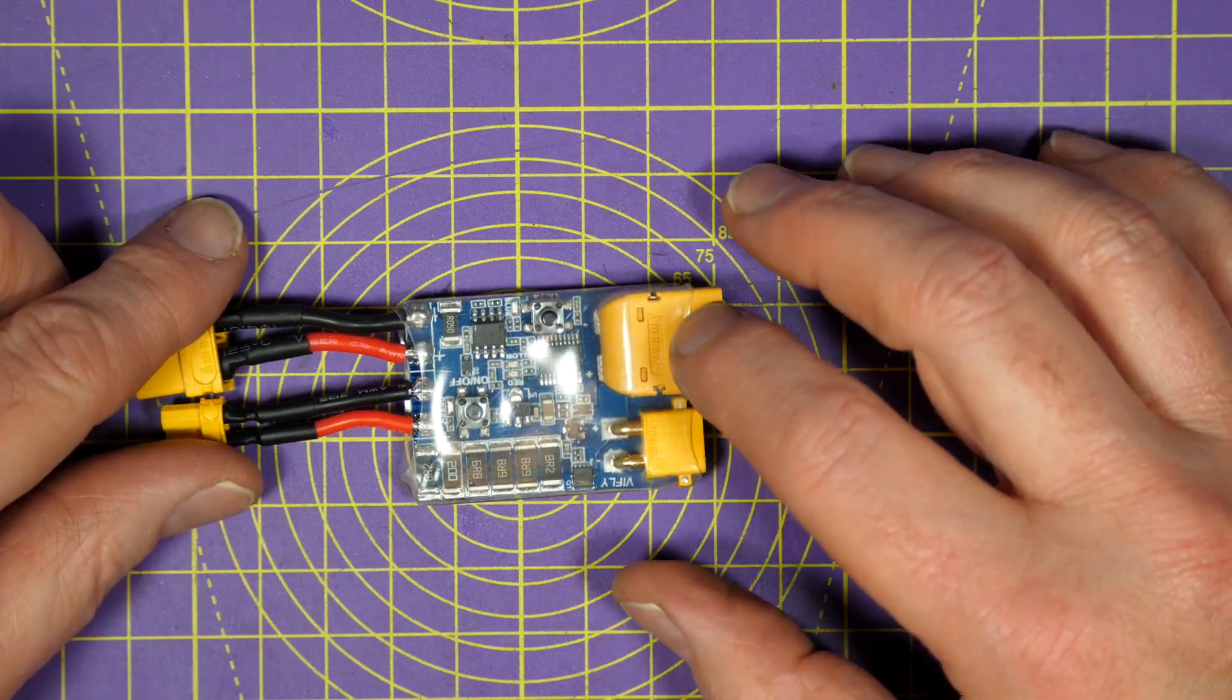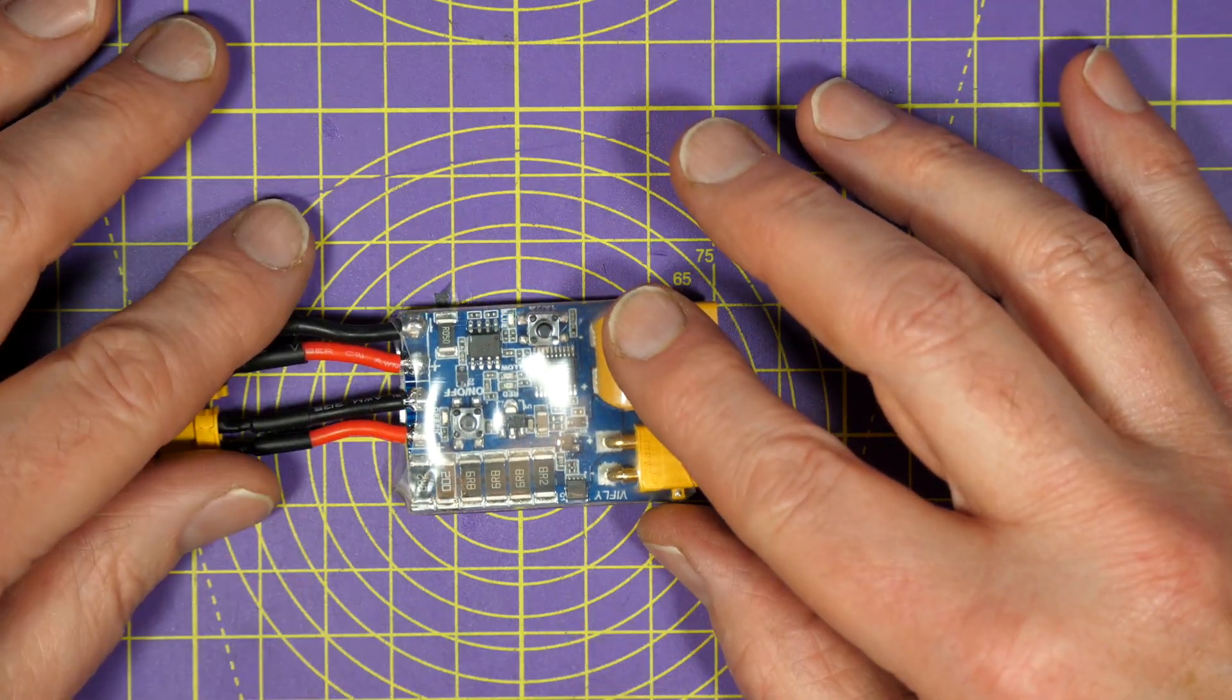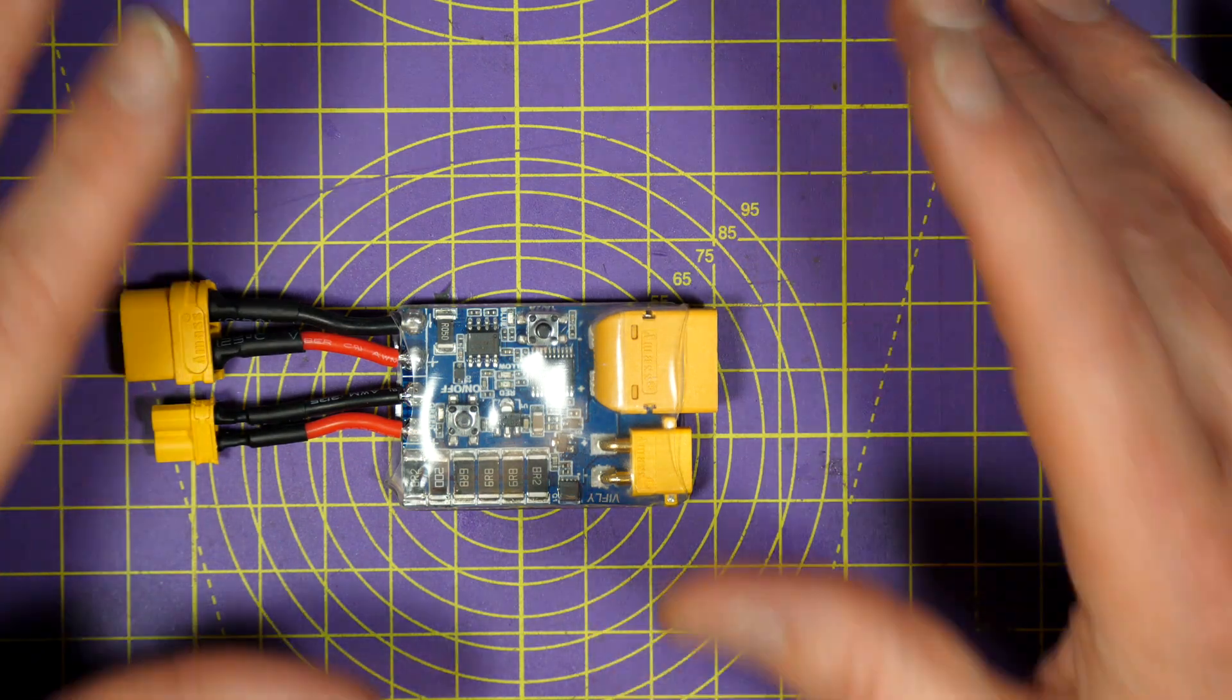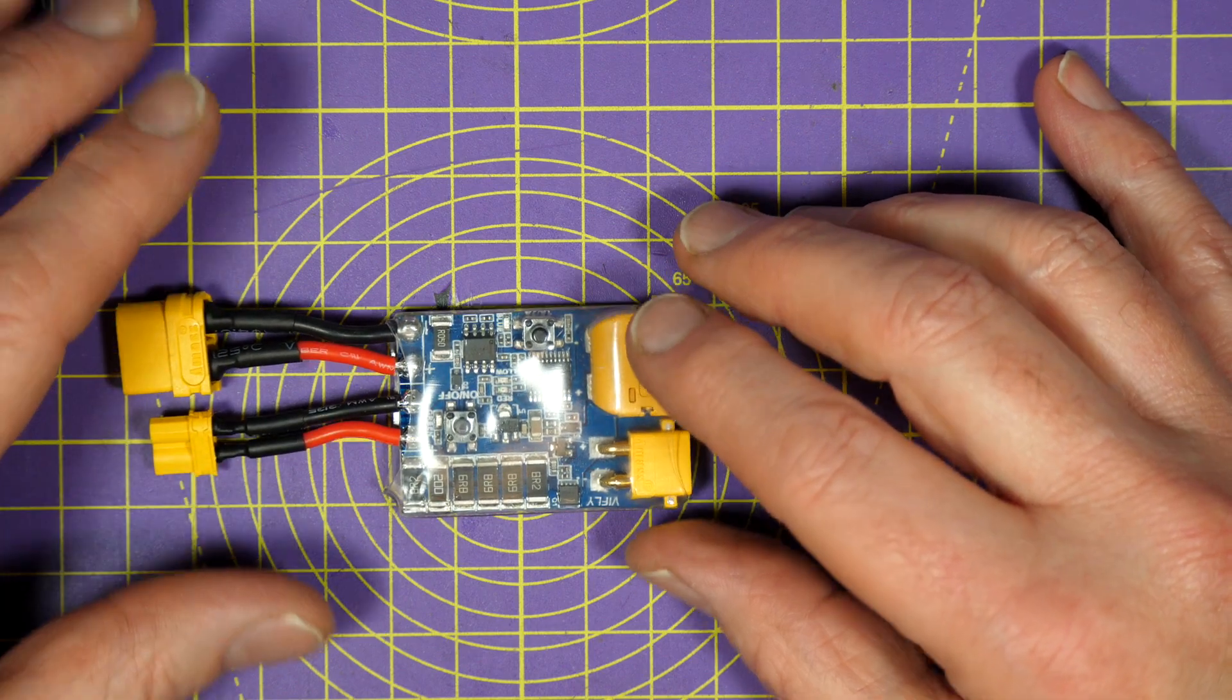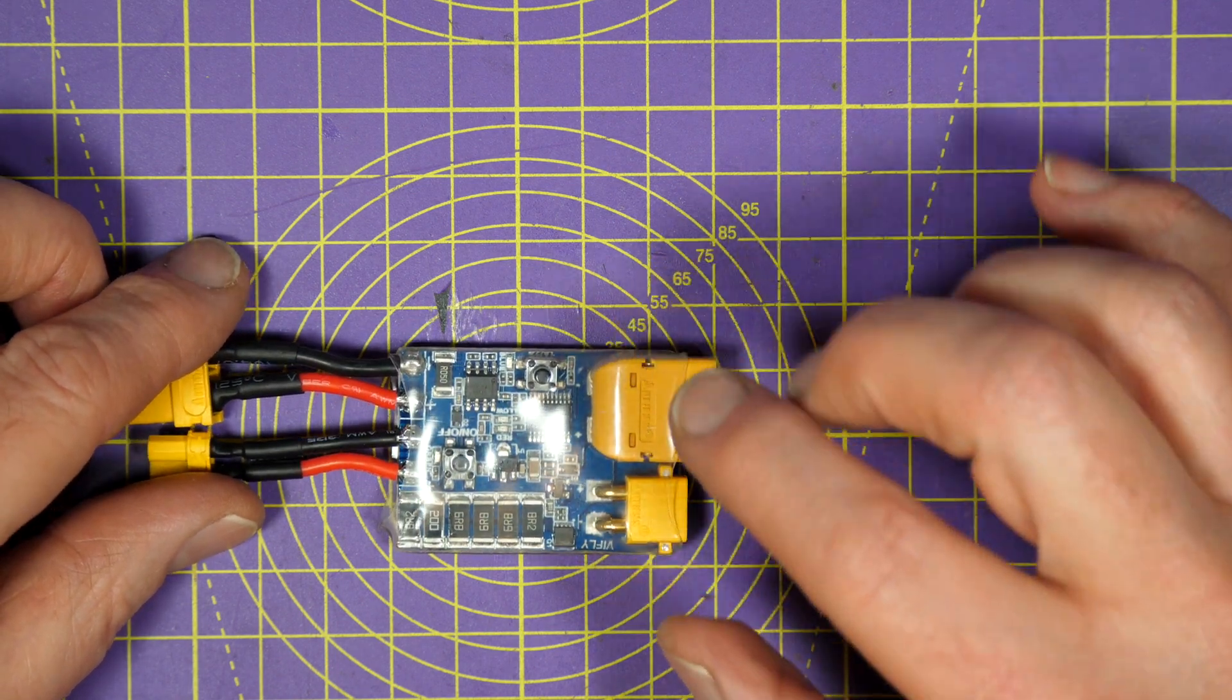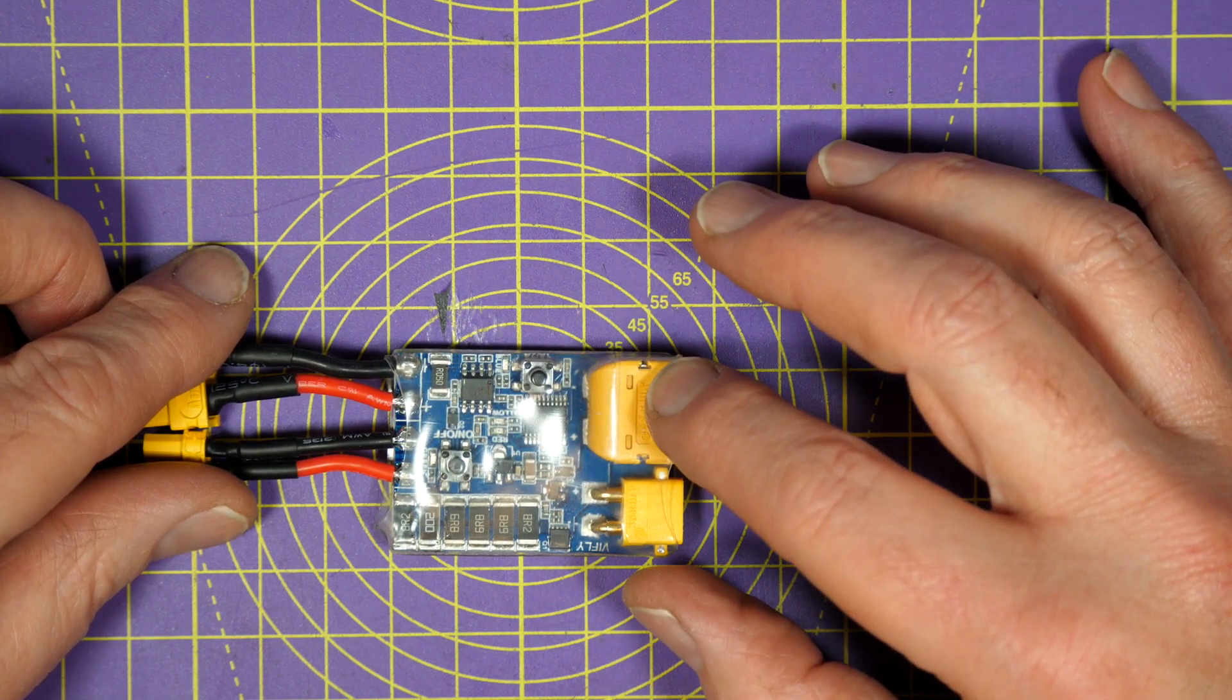A few months ago I reviewed the ViFly Shortsaver Smokestopper and it fast became one of the most useful pieces of kit that I use. It totally removes the anxiety of magic smoke and blown electronics when I plug a battery into my quads, makes life really easy, and I'm sure it's saved me money. Now there's a new version with an awesomely simple feature I've been waiting for that makes it even more useful.